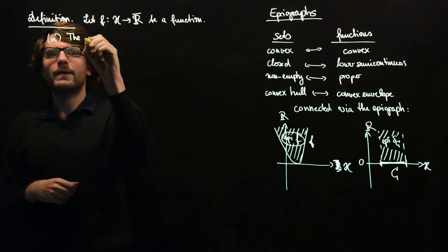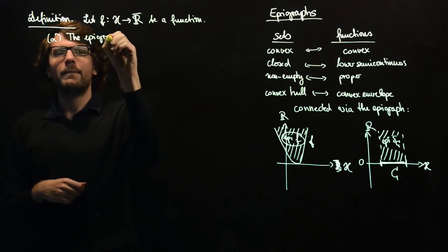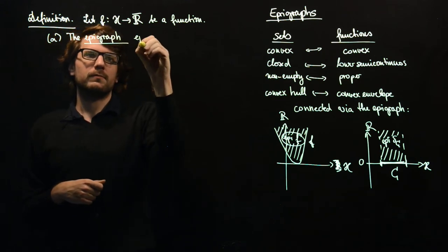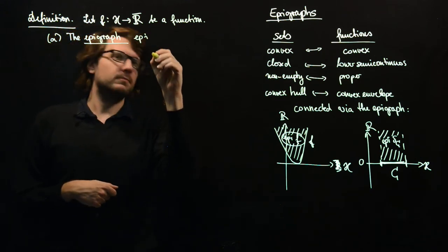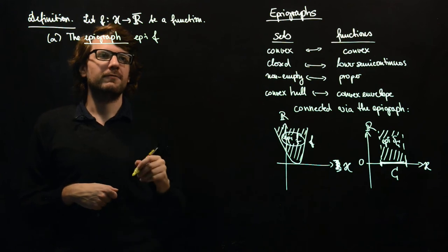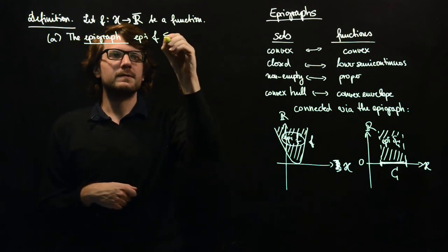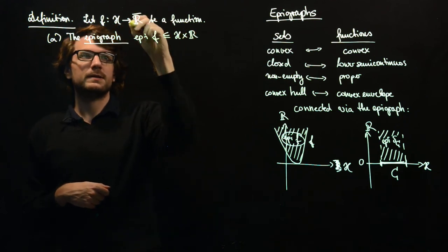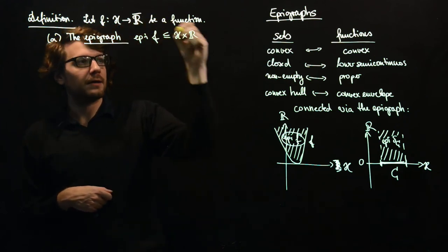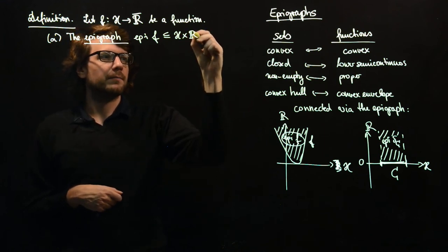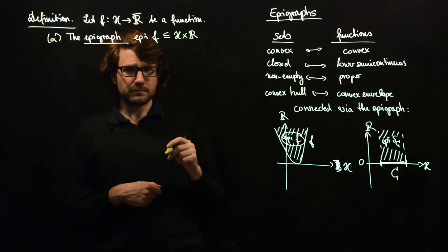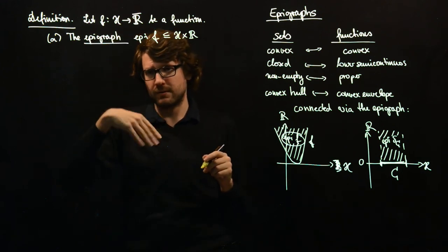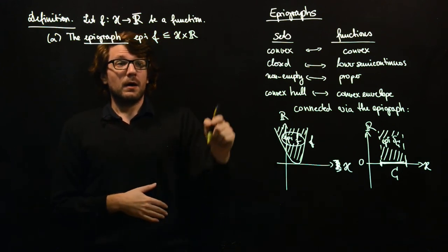Then we have actually two objects which we want to define. A, the epigraph. We call, we define, we name this epi f. And this is a subset of H times R. Notice that even though we have R bar here, it's still R here. Because R bar is not a vector space and we cannot define convexity there.